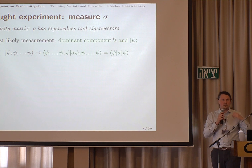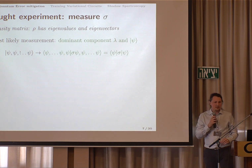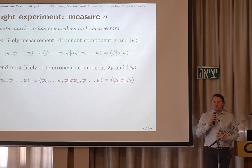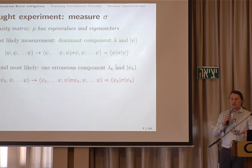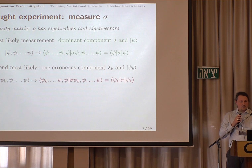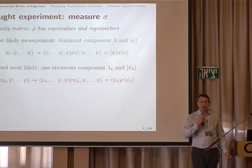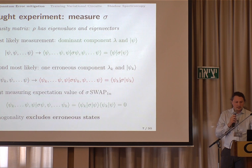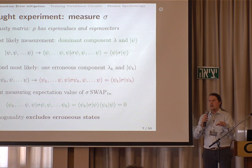In typical error models, we have a dominant component — one state happens with probability, say, 50%, and then there are exponentially many small probabilities that some errors happen. Focusing on the dominant component, which happens with probability lambda: when it comes out in a single-shot run and I measure the observable sigma, I get the expected result. However, there are exponentially many error events, and one of them might happen with a quite substantial probability. It turns out we can remove that error event just by measuring the operator sigma times the swap operation. The swap swaps the ordering of the registers, the scalar product factorizes, and since the eigenvectors are orthonormal, we get a zero contribution — just by measuring sigma times swap, we've removed error contributions.